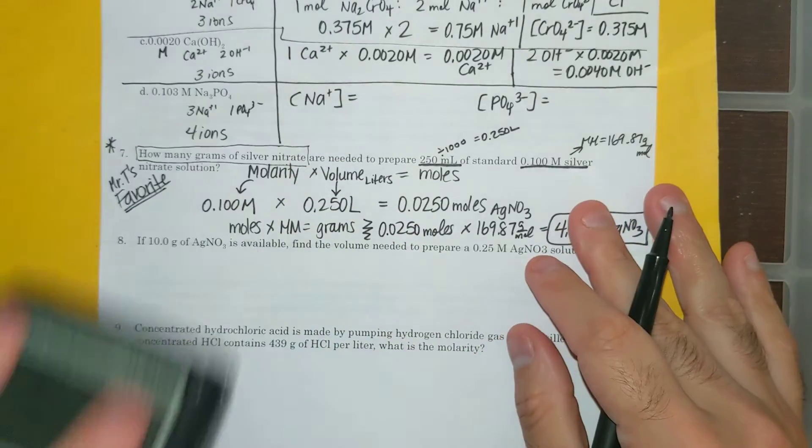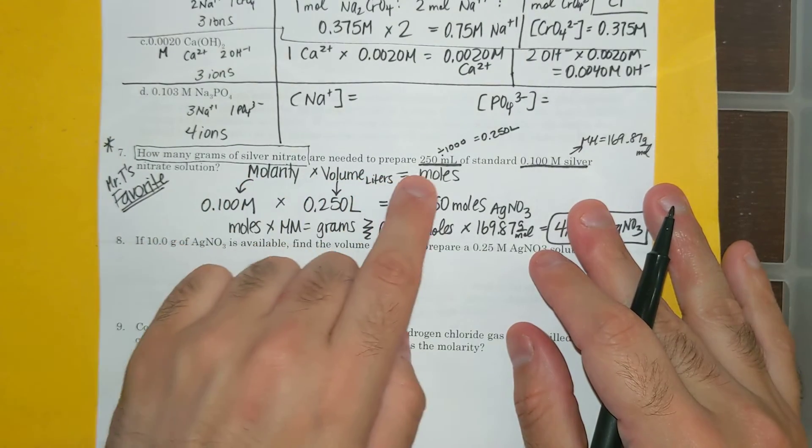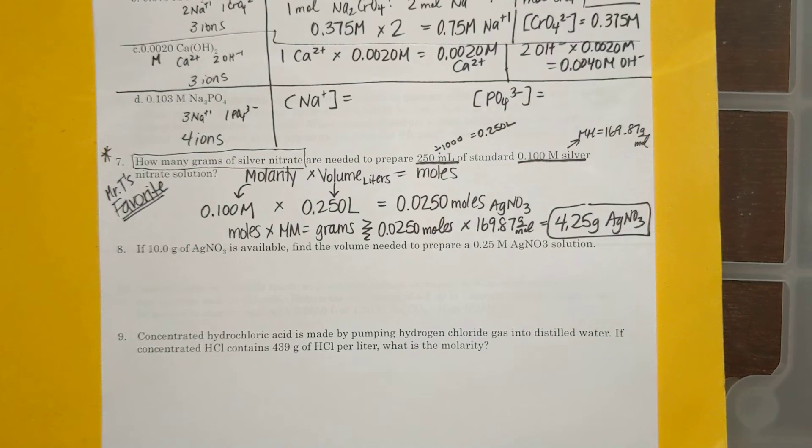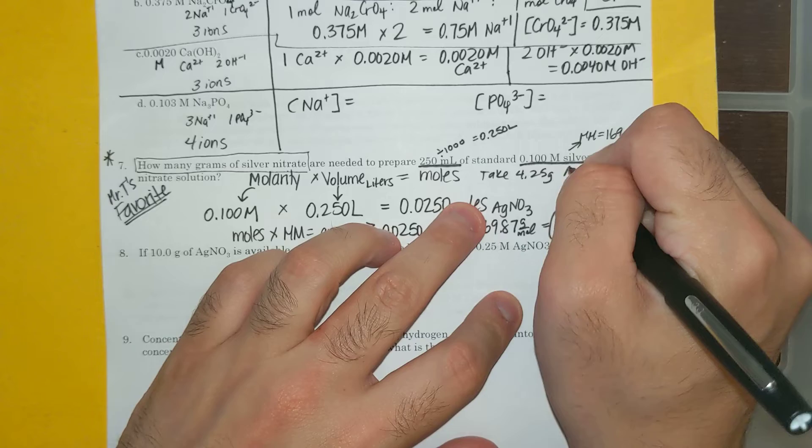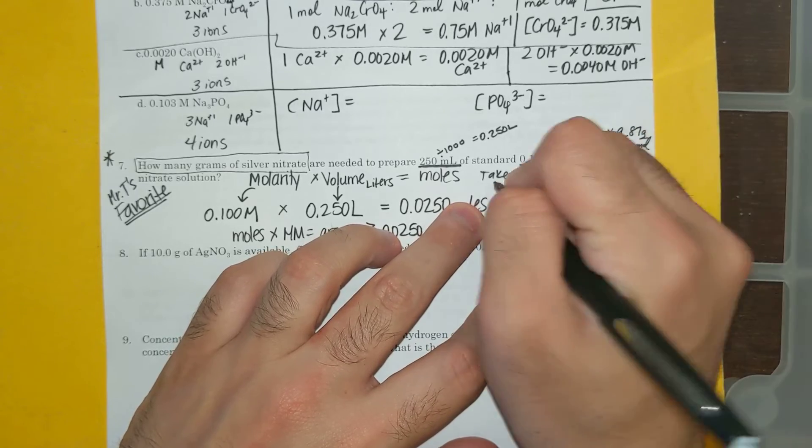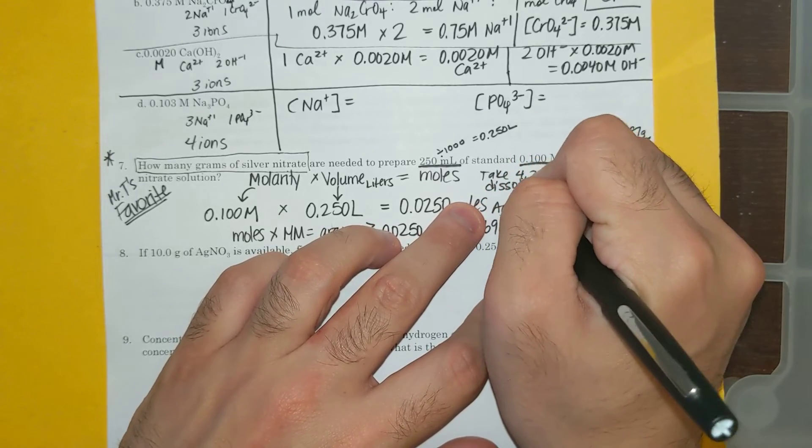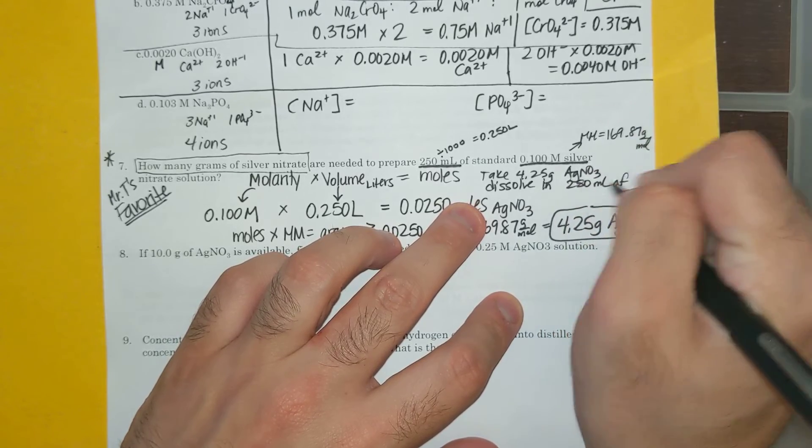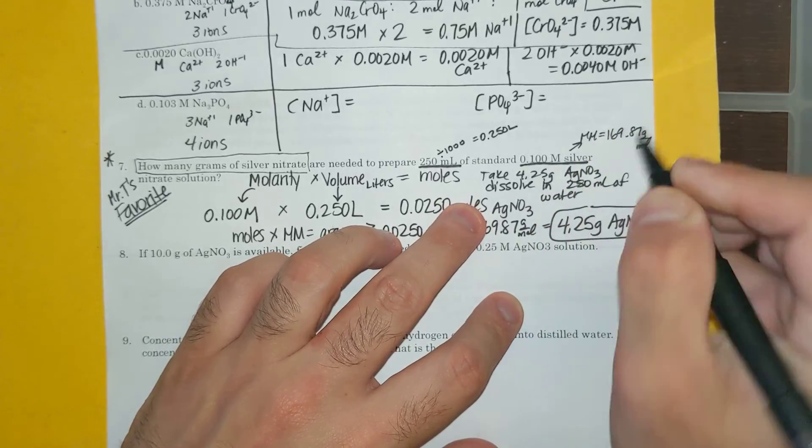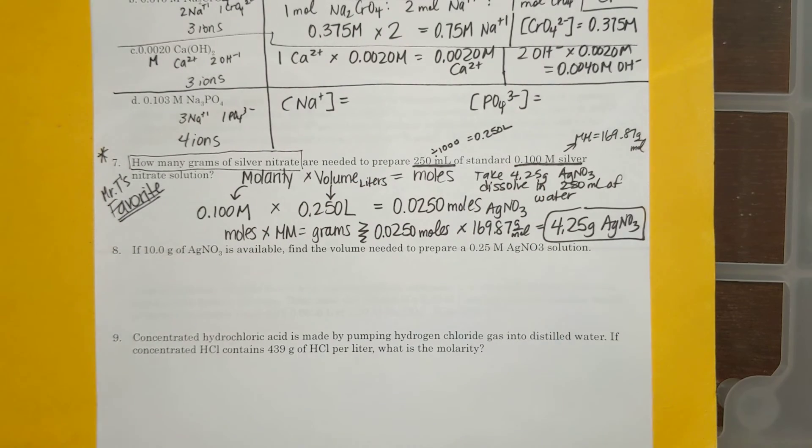And that's how I answer this question. It says how many grams of silver nitrate are needed to prepare 250 milliliters? If I wanted to prepare it, I would take 4.25 grams of AgNO3 and dissolve it in 250 milliliters of water. And if I were to do the calculation, that would give me 0.1 molar.